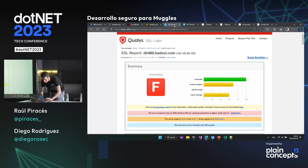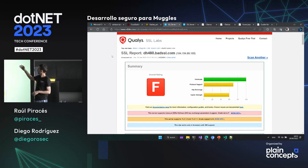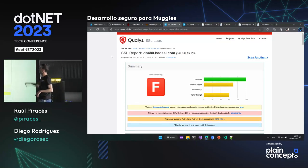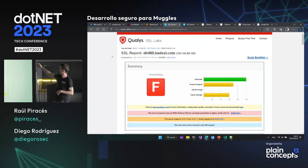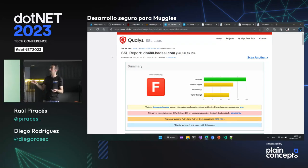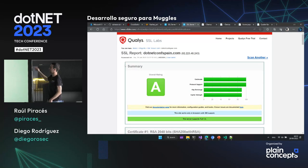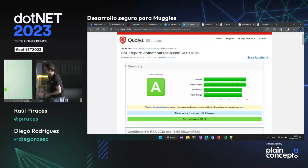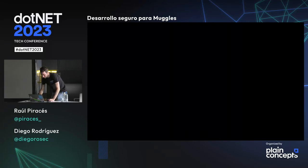Muy rápidamente, SSL Labs es una herramienta en la que ponéis un dominio y os analiza el material criptográfico para proteger vuestros servidores. Hemos precargado el análisis de una página con un algoritmo Diffie-Hellman con score muy malo, y el análisis de .NET Conf que tiene una A. Esto no es trampa, lo hemos ejecutado de verdad.